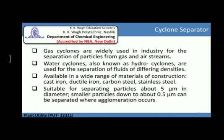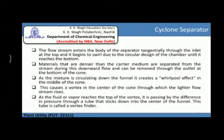Cyclone separators are available in a wide range of materials of construction like cast iron, ductile iron, carbon steel, and stainless steel. They are suitable for separating particles about 5 micrometers in diameter, and smaller particles down to about 0.5 micrometers can be separated where agglomeration occurs.